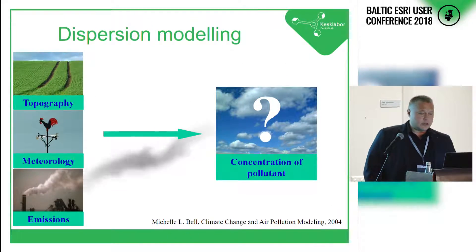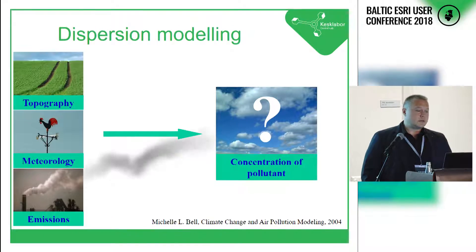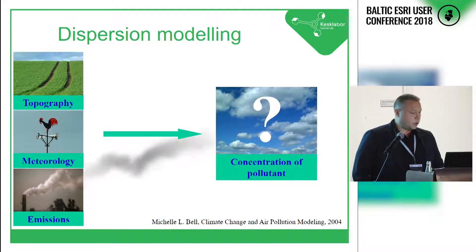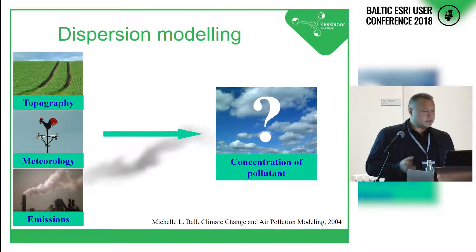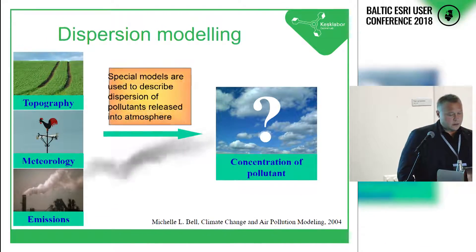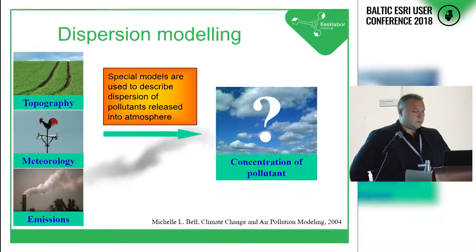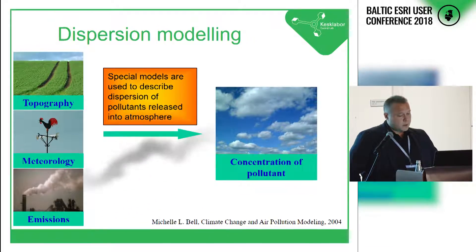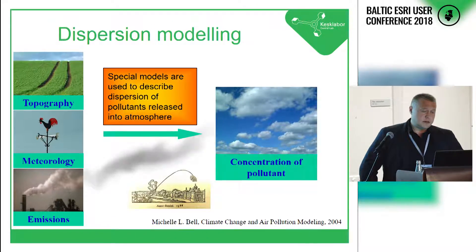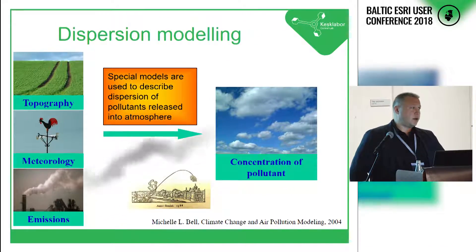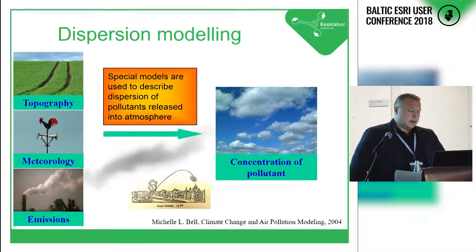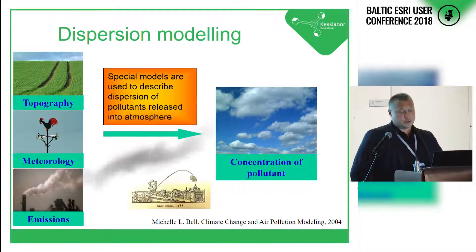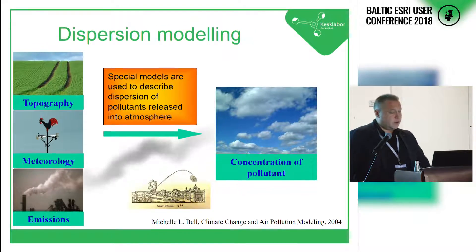Dispersion modeling is more or less combining different inputs like topography, meteorology — which is the main driver of pollutant dispersion — and emissions from stacks and chimneys. Using certain formulas, it calculates the concentration of pollutants in the atmosphere. To simplify, it's pretty similar to ballistics: if you throw something into the air and know the initial conditions, you can calculate where it lands. It's similar with pollutants, though the variables and algorithms are a bit different.